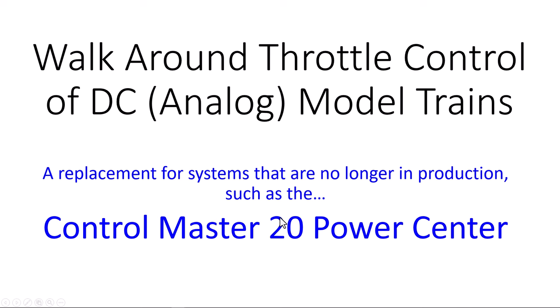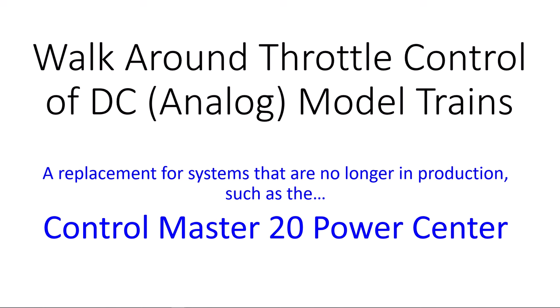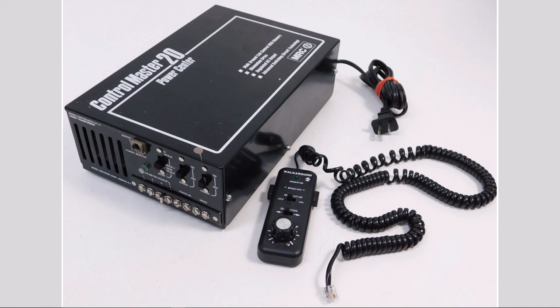Walk around throttle control of DC or analog type model trains. This is a replacement for systems that are no longer in production, such as the Control Master 20 Power Center. It's a good unit. They don't make them anymore. You can still buy them on eBay for a couple hundred dollars when they're available, but they are getting as rare as hen's teeth. There is another company out there making something similar. However, rather than put your future on something that somebody may not continue to offer, I've come up with a kind of a generic thing.